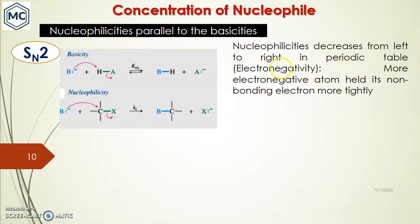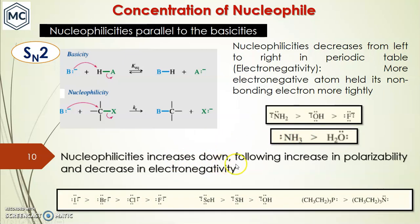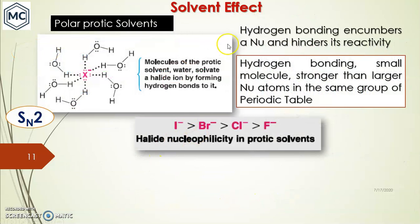Nucleophilicity generally decreases when going from left to right across the periodic table, due to increasing electronegativity — more electronegative atoms hold their lone pair electrons more tightly. That is why NH2⁻ is more nucleophilic than OH⁻ and F⁻, and ammonia is more nucleophilic than water. Nucleophilicity increases down a group because polarizability increases and electronegativity decreases — that is why I⁻ is more nucleophilic than F⁻, and RS⁻ is more nucleophilic than OH⁻.